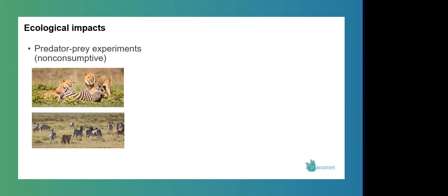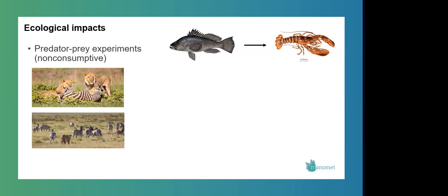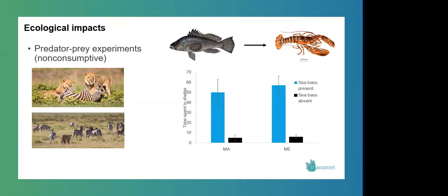So we wanted to test this with sea bass and lobster. So can the mere presence of black sea bass impact lobster behavior? And the short answer is yes. We tested this on multiple levels and in multiple populations and looking at multiple behaviors. This figure is just one glimpse, but shows the amount of time lobsters spent inside and outside of shelter in the presence and absence of black sea bass.